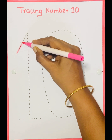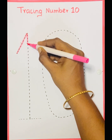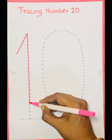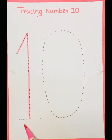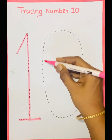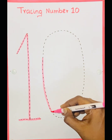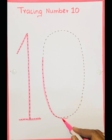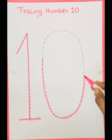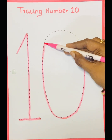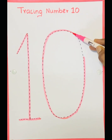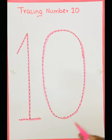Tracing number 10 — so we have to trace the number. 1, 0 — 10. 1, 0 — 10. I hope you enjoy this activity; you also can try like this. Thank you all.